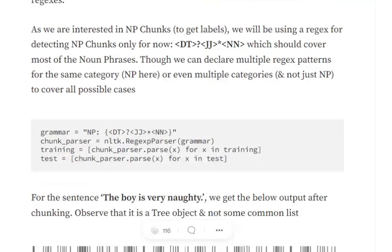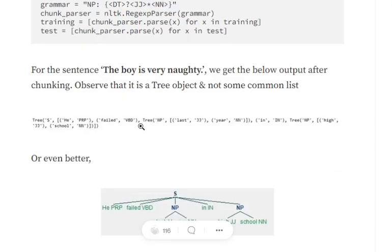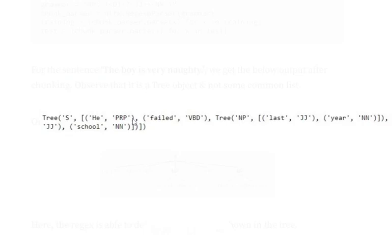Chunking is done by defining regex patterns. The pattern I've used is: determiner, JJ*, NN. This is fed into the regex parser as 'NP: {pattern}'. If you want other phrase types like verb phrases or noun-adjective phrases, you can list them separated by commas. I then parse the whole text through this parser. For 'the boy is very naughty', the output shows words not part of any noun phrase are separate, while noun phrases like 'last year' and 'high school' are grouped as NP trees.